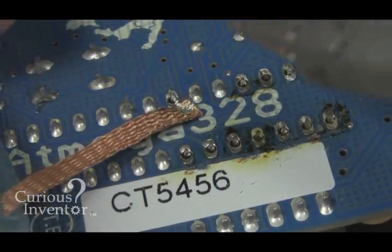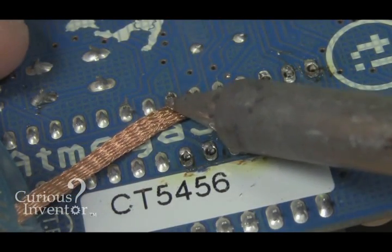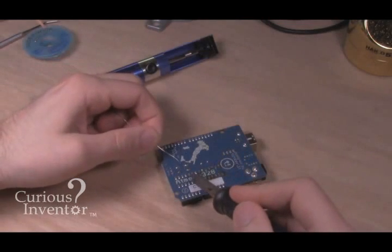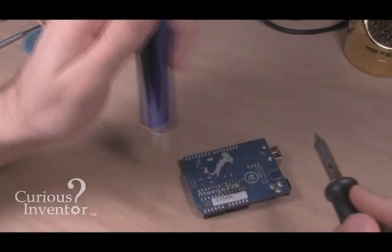If there's too much solder remaining to easily break the pin free, you might have to use wick to clean up what's left. If you don't have any wick, it's sometimes easier to re-solder the hole and try again rather than continue to use the solder sucker on a mostly empty hole.